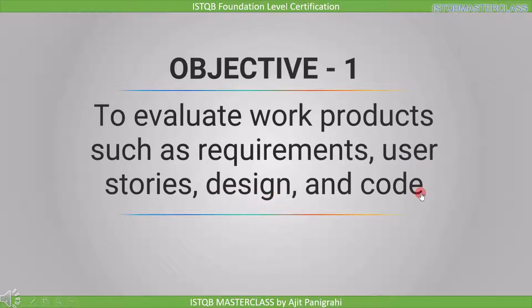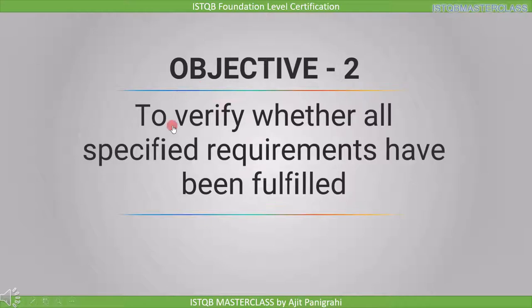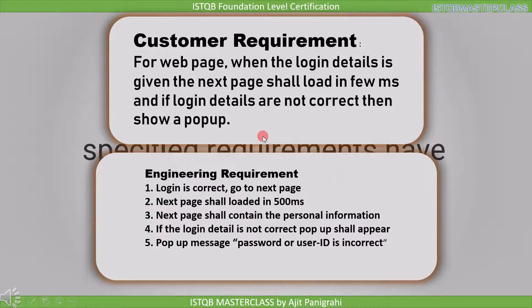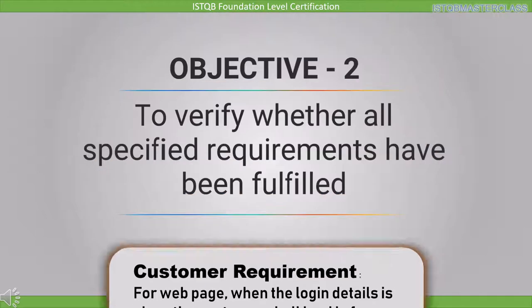The second objective is to verify whether all specified requirements have been fulfilled. After analyzing the customer requirement and asking questions, we get the engineering requirement, which includes: if login is correct, go to the next page; the next page shall load in 500 milliseconds; the next page shall contain personal information; if the login details are not correct, a pop-up shall appear; and the pop-up message is 'password or user ID is incorrect.' By asking questions we got all the missing information, included in the engineering requirement. Like this, in each stage we have to verify whether all specified requirements have been fulfilled.